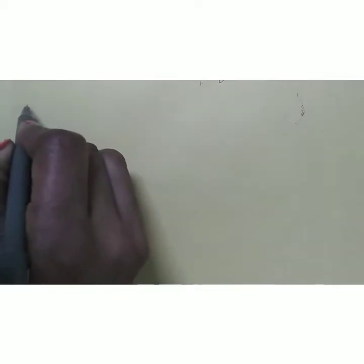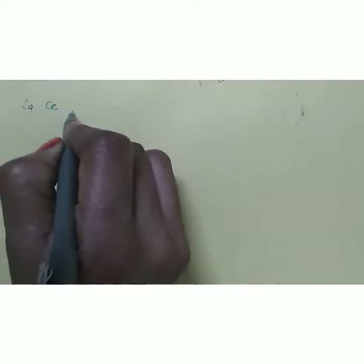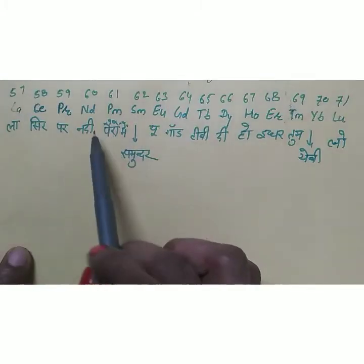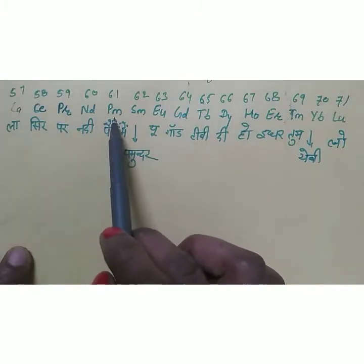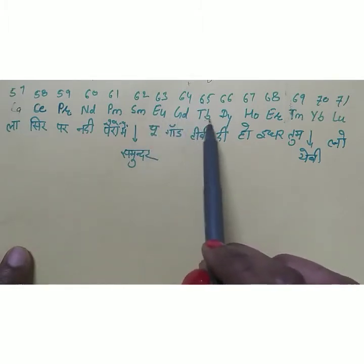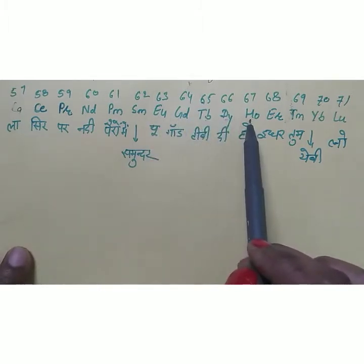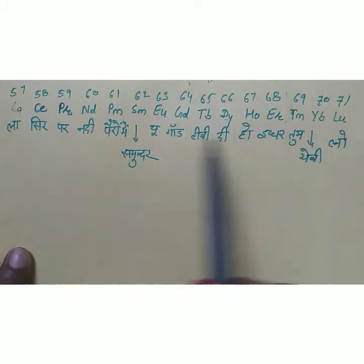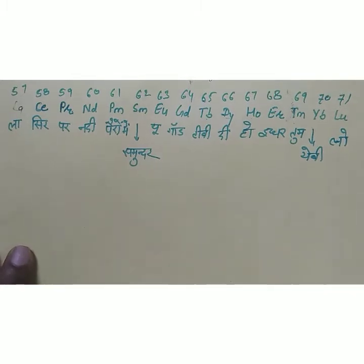Now the learning trick for lanthanoid elements. In lanthanide elements, lanthanum is also included. The elements are: lanthanum, cerium, praseodymium, neodymium, promethium, samarium, europium, gadolinium, terbium, dysprosium, holmium, erbium, thulium, ytterbium, and lutetium. These are the 15 elements included in the lanthanoid series.